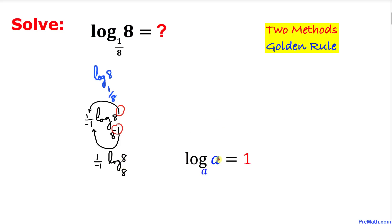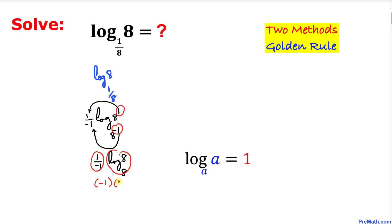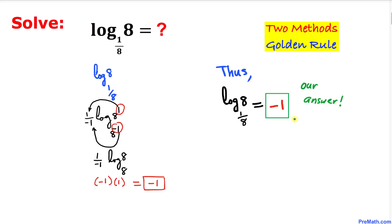So we get 1 over negative 1 outside, times log of 8 with the base 8. According to the identity rule, since the argument and base are the same, this equals 1. So 1 over negative 1 is simply negative 1, and multiplying by 1 gives us negative 1 as our answer.